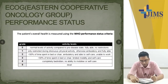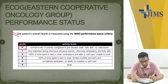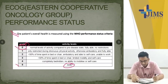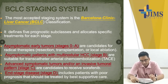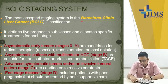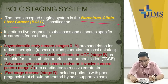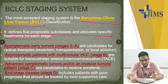The ECOG performance status ranges from 0 to 5 — 0 is normal and 5 is dead. The BCLC staging system is the most acceptable staging system for hepatocellular carcinoma. It stands for Barcelona Clinic Liver Cancer. It defines 5 prognostic subclasses and allocates specific treatments for each stage.